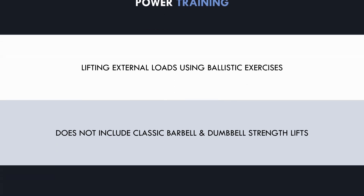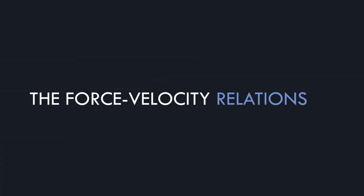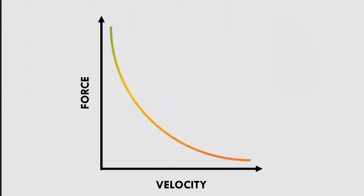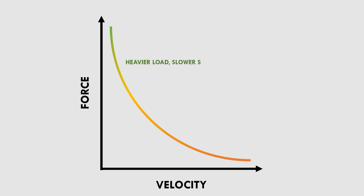Now that we have established what we mean by power training, let's explore the force-velocity relationship. The force-velocity relationship describes a simple relationship between force production and movement velocity, or in simple terms, it shows the relationship between how much weight is lifted versus how fast it can be lifted. Essentially, the heavier the load is, the slower the exercise will be performed, while the lighter the load is, the faster the exercise can be performed.